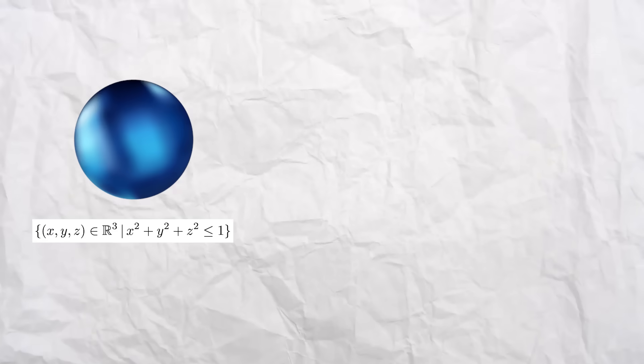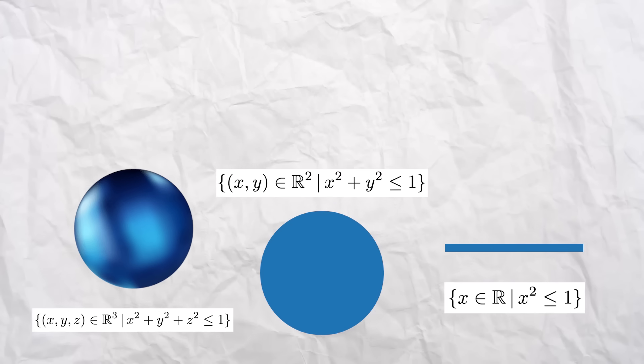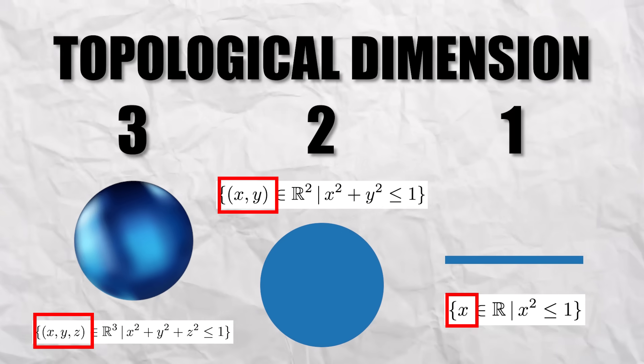So, how's this related to fractals? Well, when looking at an object, we can define it through a set. A sphere can be represented by a set of points, same with a circle, and even a line. From here, it's easy to categorize these sets into what's known as a topological dimension. This is the number of coordinates needed to specify the position of a point in space, and the definition of dimension we're all familiar with.